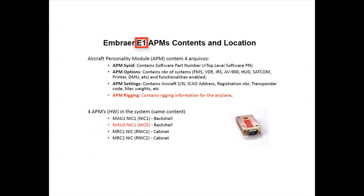On E1 platforms there are some differences in APM file location and file contents. There is a fourth file on the APMs — the APM rigging file — that contains the rigging information for the flight control surfaces. Also, the location of the APM on MAU 3 is different: on E1 it is located on NIC 5 back shell, while on E2 it is on NIC 6 back shell.